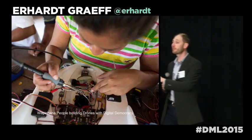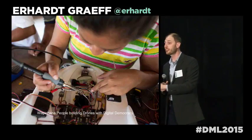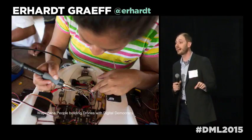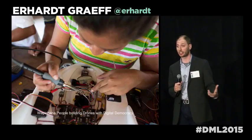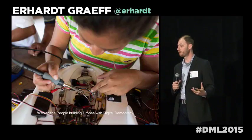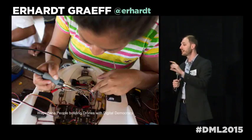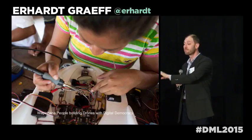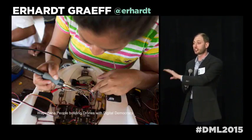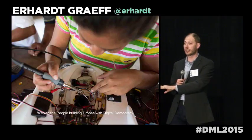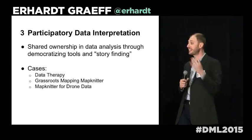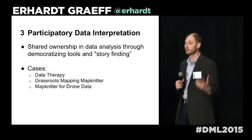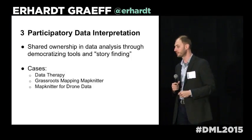A group called Digital Democracy has been working in Guiana with the Wapachana people, who are trying to monitor their lands with aerial surveillance. They're actually building the drones there — soldering the electronics together — and making sure they can repair and use them themselves.